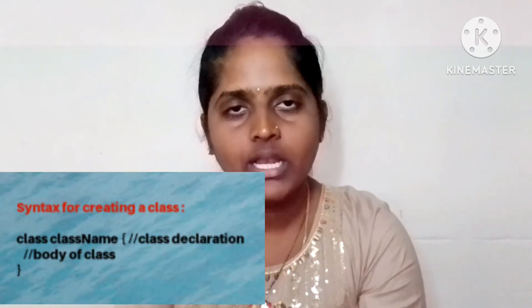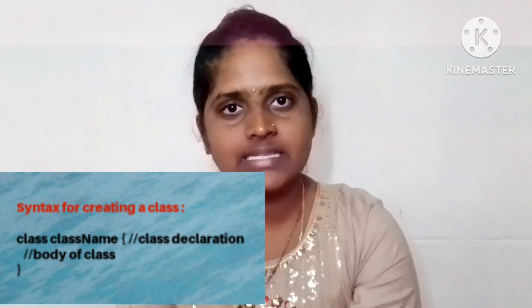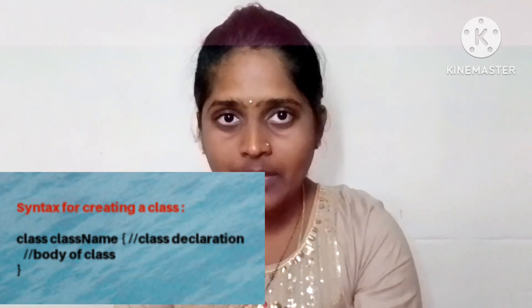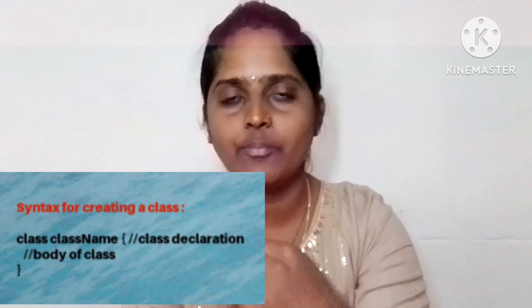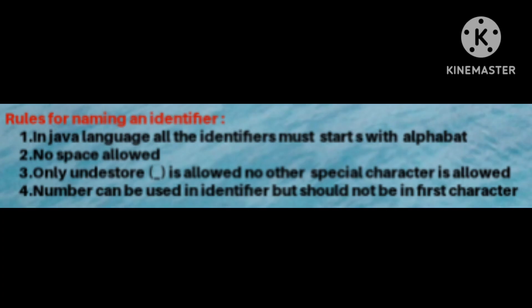Identifiers are names provided by the programmer. For example, a class name is provided by the user or programmer who is creating the program. When creating an identifier, there are rules we must follow. If you do not follow those rules, a compile-time error will occur.